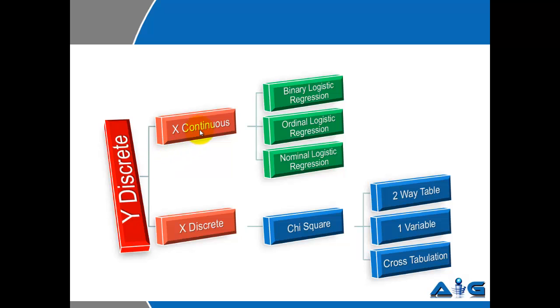To sum up: Y discrete, X continuous - three options: BLR, OLR, and NLR. Y discrete, X discrete - chi square test: two-way table, one variable, or cross tabulation.